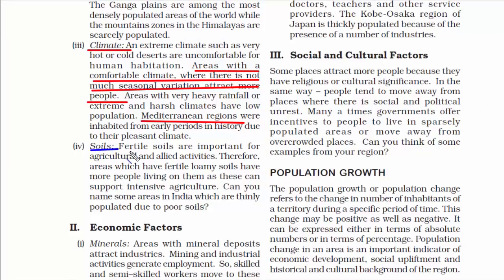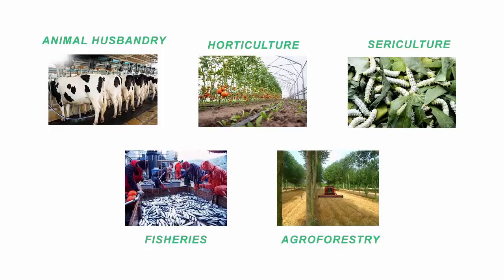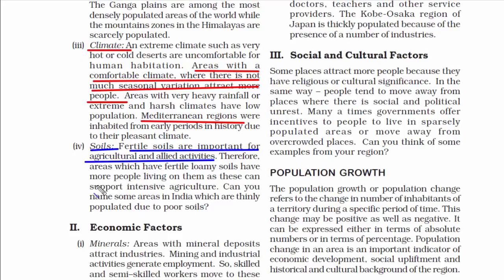The last geographical factor is soils. Soil is usually related to agricultural and allied activities. By allied activities, we are talking about animal husbandry, horticulture, sea agriculture, fisheries, agroforestry, etc. All these activities require fertile soil for best productivity, and many people rely on these activities for their living. Therefore, soil directly comes as an important factor for population distribution.